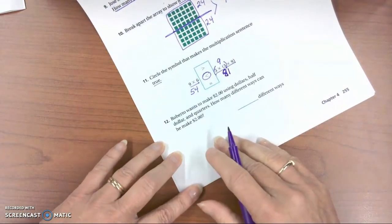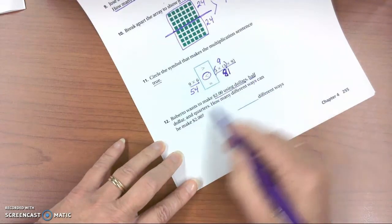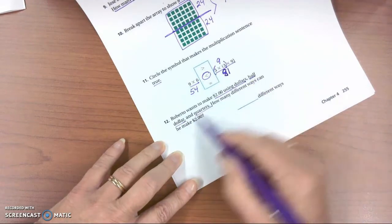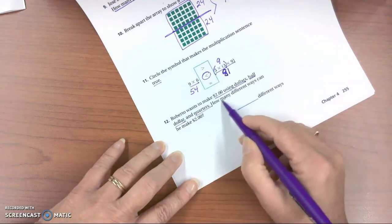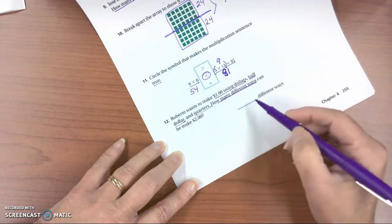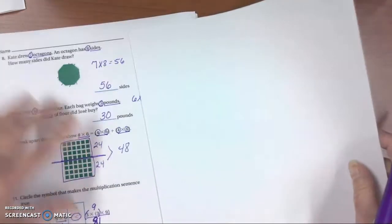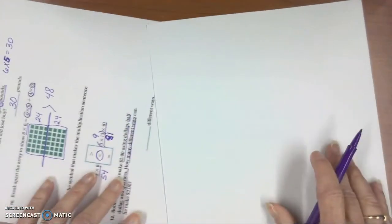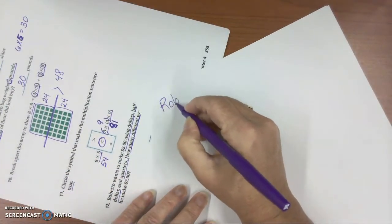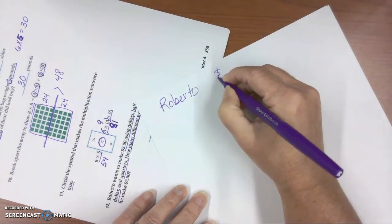This last problem says, Roberto wants to make $2 using dollars, half dollars, and quarters. So he's going to either make it with dollars, half dollars, or quarters. How many different ways can he make $2? So for this problem, we're going to use a strategy to make a table, which is one of the lessons you learned in this unit. So I'm going to make an organized table. So I'm talking about Roberto, and he wants to make a total of $2.